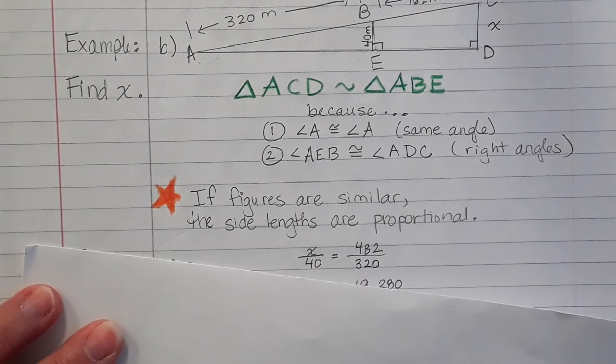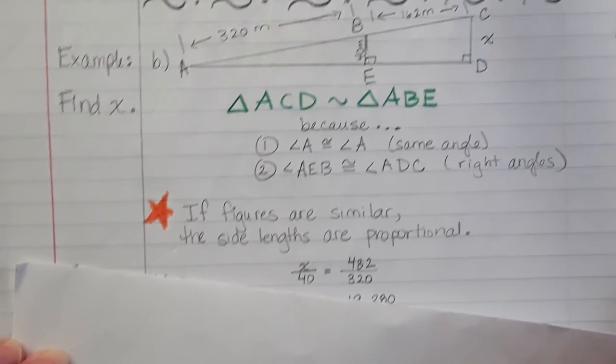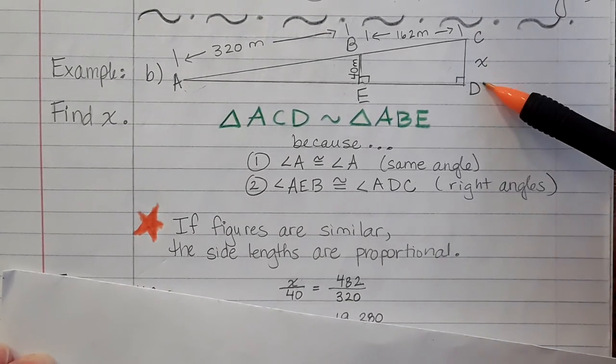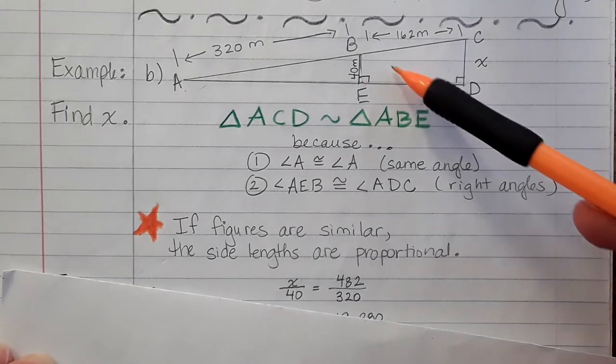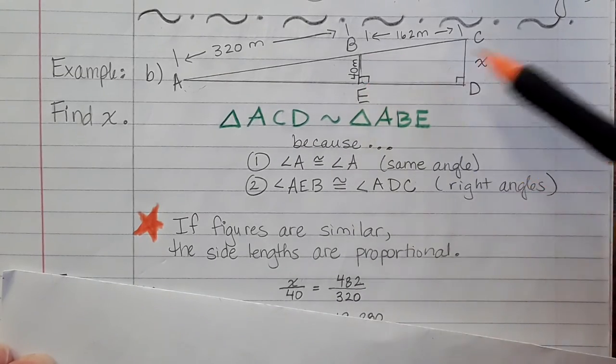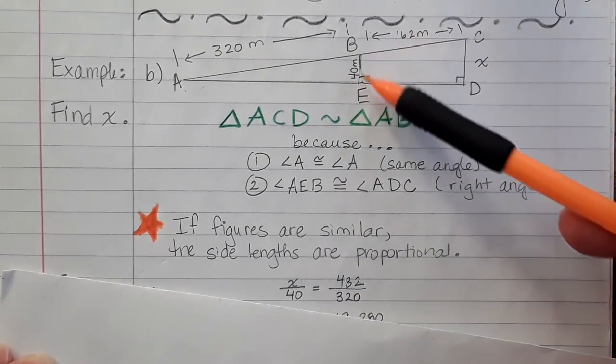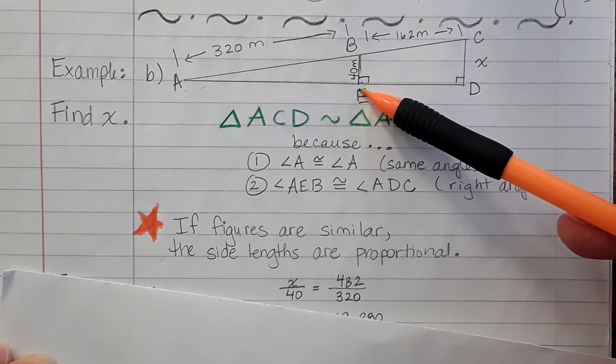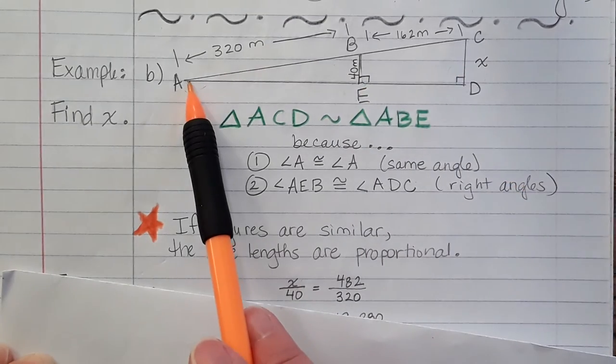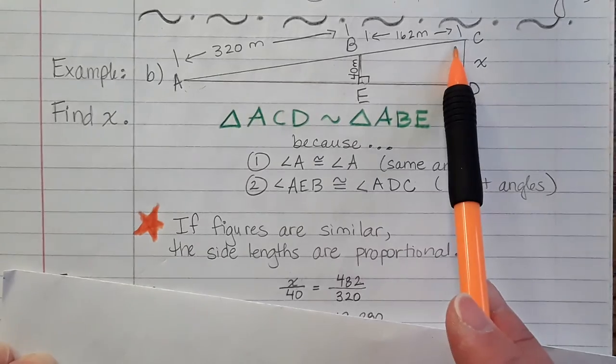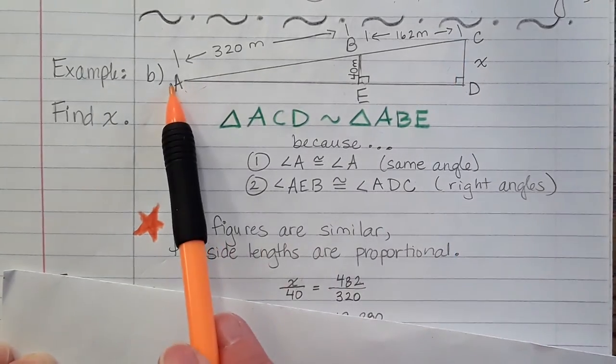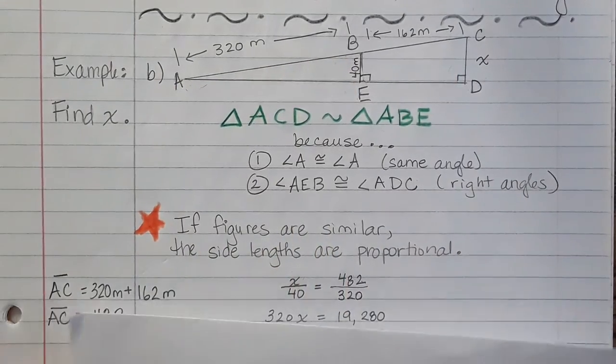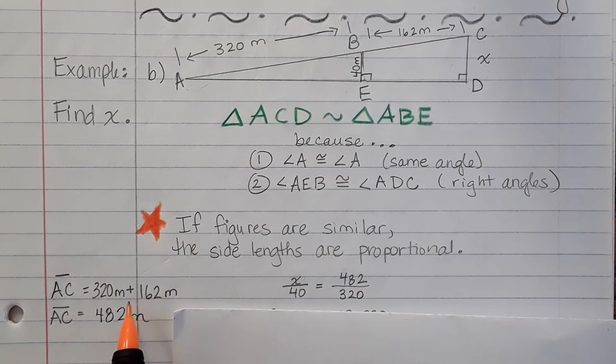The side length over the side length. So that's the side length of the bigger triangle over the side length of the smaller triangle is equal to the slant of the bigger triangle over the slant of the smaller triangle. And I know that's the measurement because I can just add.